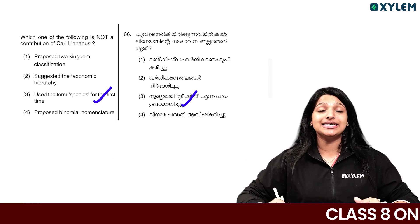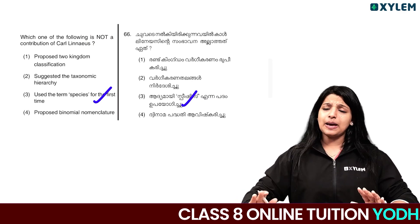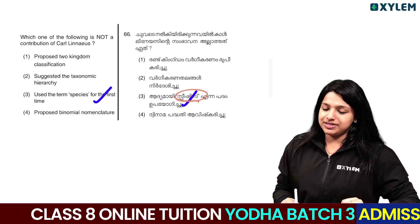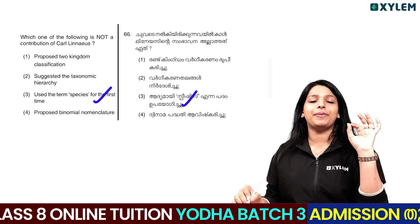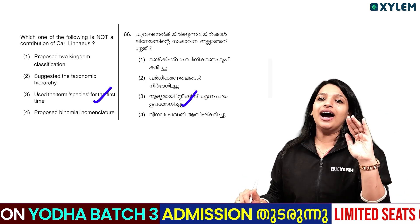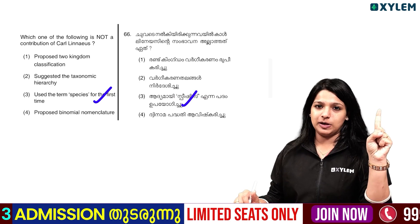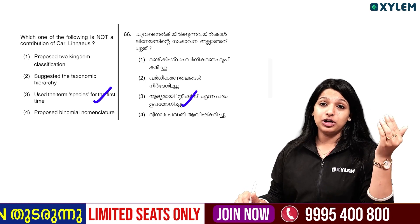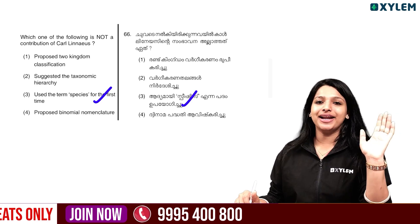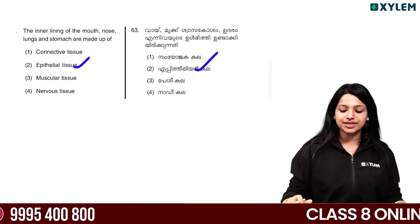Which one of the following is the notable contribution of Carl Linnaeus? Carl Linnaeus contributed the taxonomy hierarchy, binomial nomenclature, and classification. John Ray and Carl Linnaeus are both noted in taxonomy.